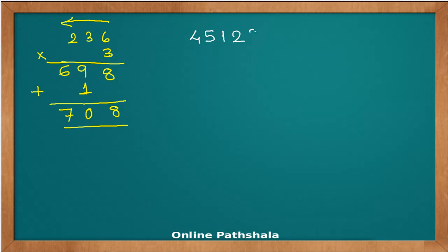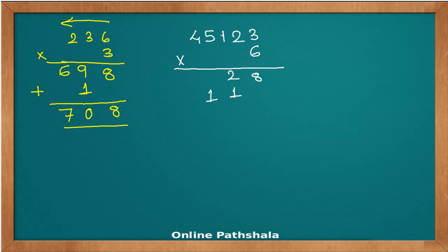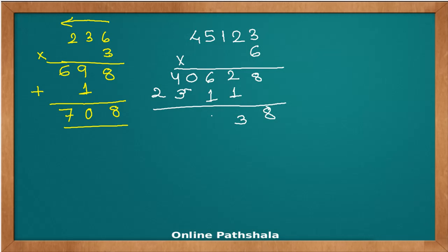Working right to left on 45123 multiplied by 6: six times three is 18 — carry 1; six times two is 12 — carry 1; six times one is 6; six times five is 30 — put 0, carry 3; six times four is 24 — put 4, carry 2. Adding the carries: four plus three is seven, two plus one is three, six plus one is seven. The answer is 270738.